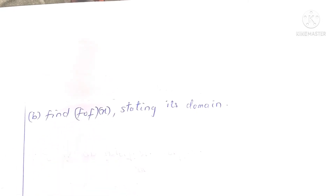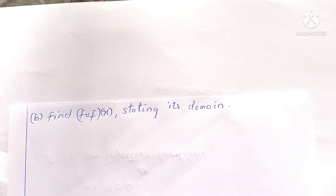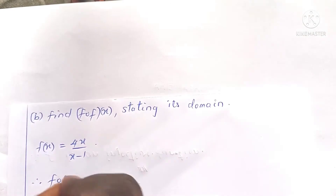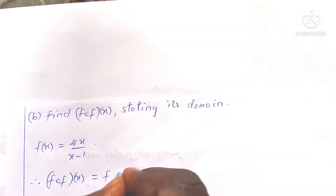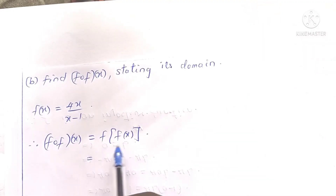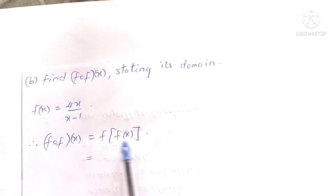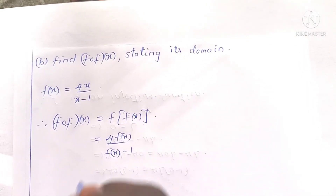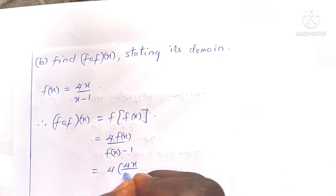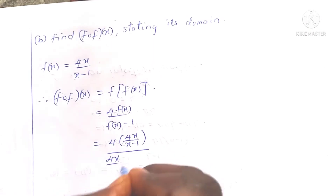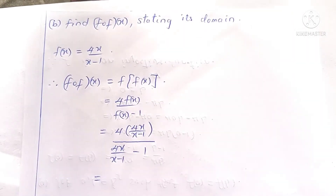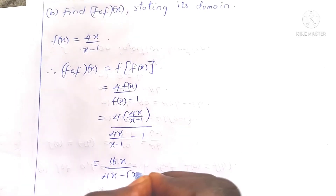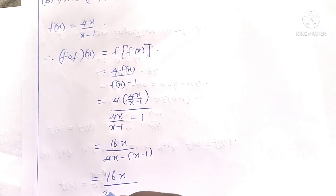We also need to find the composite function f of f of x, stating its domain. We know f of x equals 4x divided by x minus 1, so f of f of x equals 4 times f(x) divided by f(x) minus 1. Substituting, this becomes 4 times (4x over x minus 1), divided by (4x over x minus 1) minus 1. Multiplying the numerator and denominator by x minus 1 gives 16x divided by 4x minus (x minus 1), which simplifies to 16x divided by 3x plus 1.